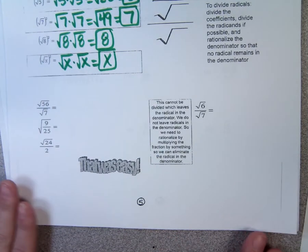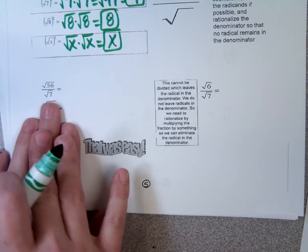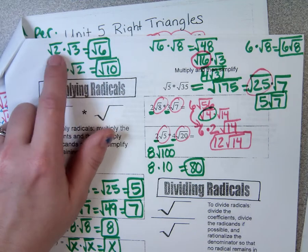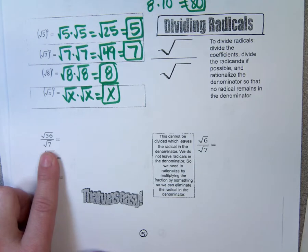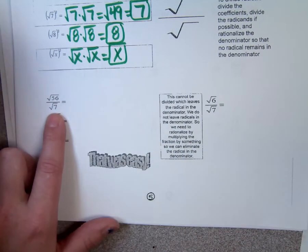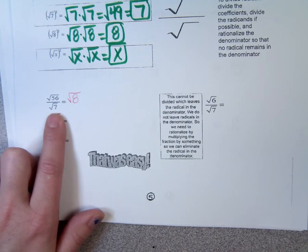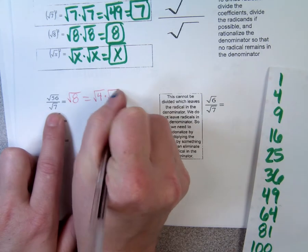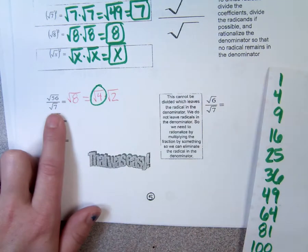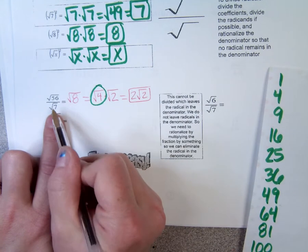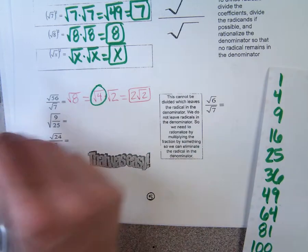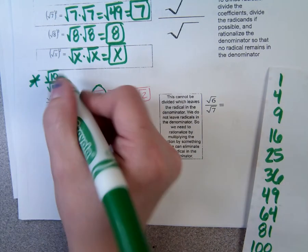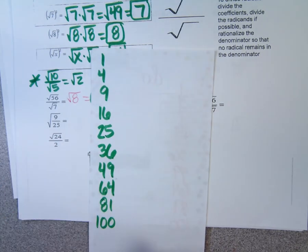The next section is dividing radicals — this can be a little harder. When you're dividing, as long as they're both under a radical, try to divide them and see if you get something nice. For square root of 56 divided by square root of 7, dividing gives square root of 8. Then check: can 8 be divided by a perfect square? Yes, 4 goes in twice. 4 is the perfect square; square root of 4 is 2. The final answer is 2 square root of 2. Similarly, square root of 10 divided by square root of 5 is square root of 2, which can't be broken down further.